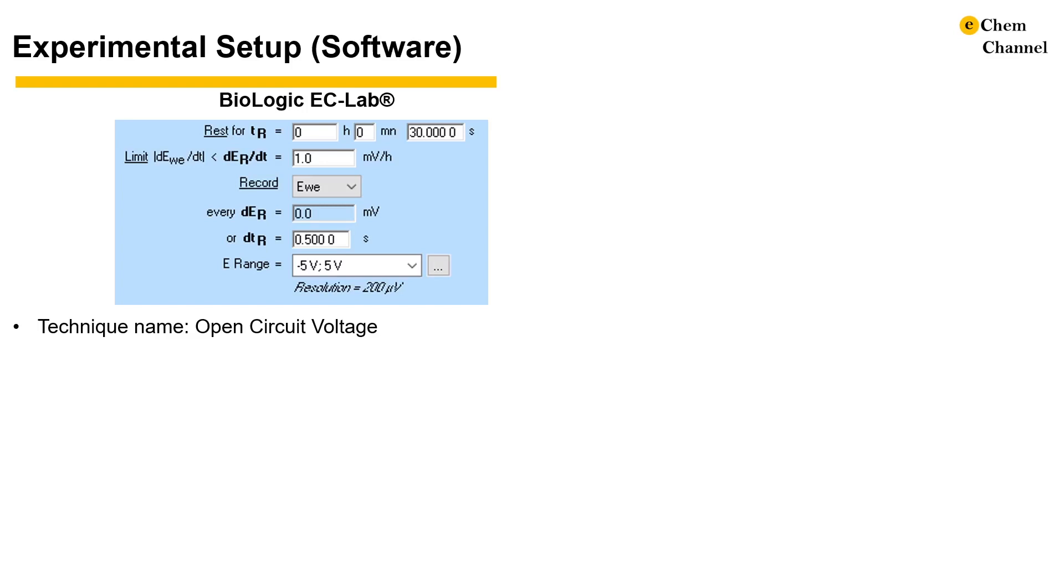I'm more familiar with BioLogic's ECLAB software, so I'm going to use it as the main example. In this software, you need to add a technique named Open Circuit Voltage, then you will see a typical setup page that looks like this.